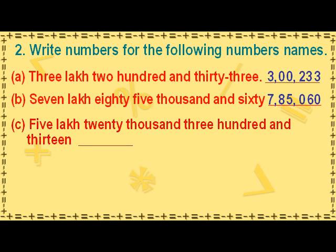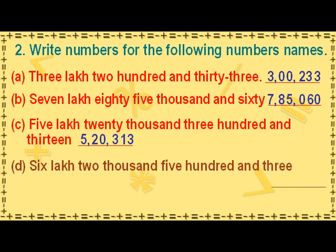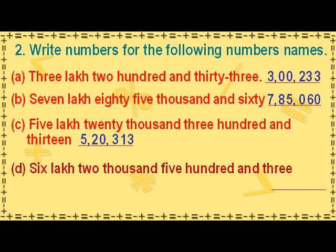The next number will be written as: the digit 8 in the hundreds place value, the digit 8 in the tens place value, and the digit 8 in the ones place value. The following number name will be written as: the digit 6 in the lakhs place value, the digit 0 in the ten thousands place value, the digit 2 in the thousands place value, the digit 5 in the hundreds place value, the digit 0 in the tens place value, and the digit 3 in the ones place value.